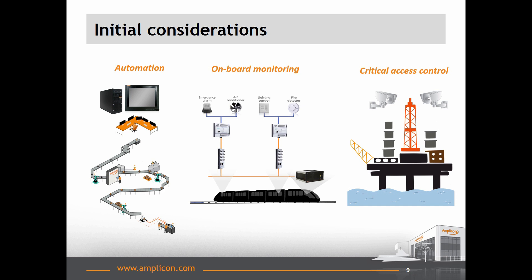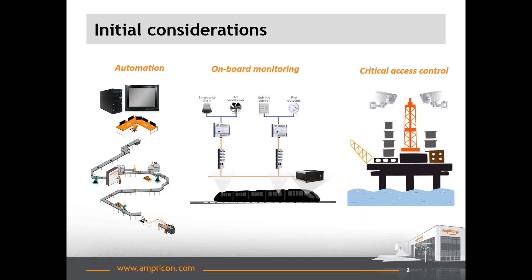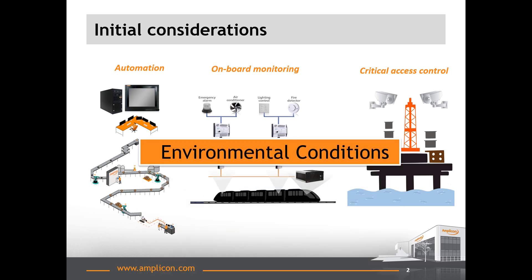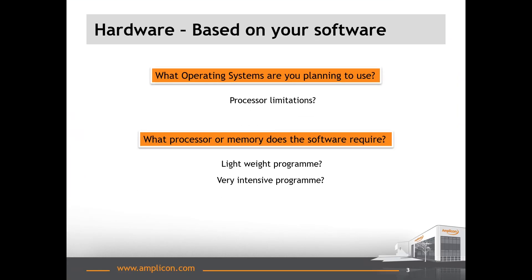So, what do we need to consider when specifying an industrial computer? The starting point is to look at what your computer is going to be doing, and therefore what software you will require for the project. Depending on your application, you will have acquired specific software that offers the programming features you need, and it is precisely the characteristics of this software that will take you down one hardware route or another. One more factor needs to be taken into account at this initial point, and that is the environmental conditions of the location where your computer needs to be installed. This will also have a major effect on the hardware you choose.